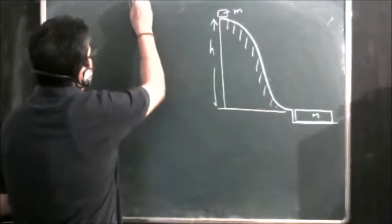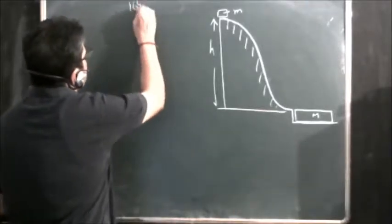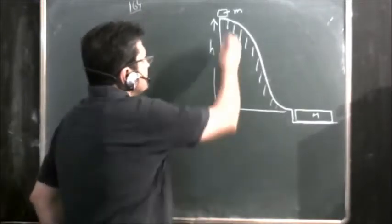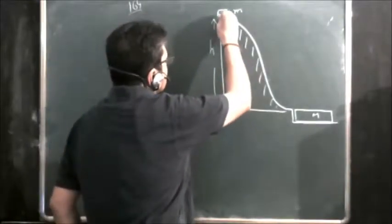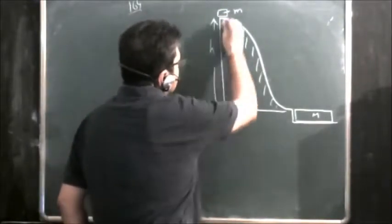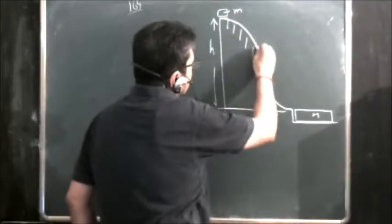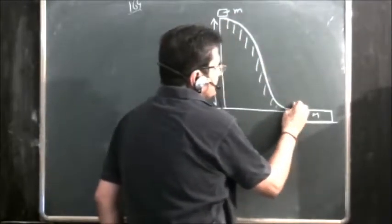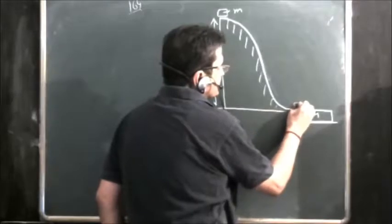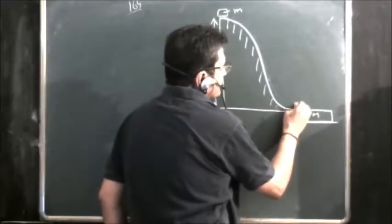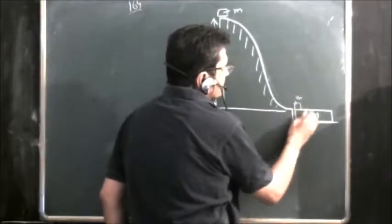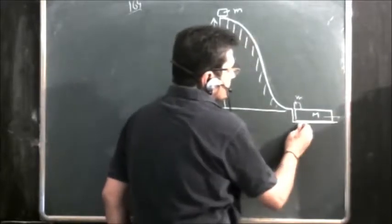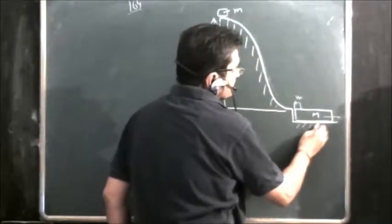We will solve an IIT JEE problem — Chapter 1, problem 164. In this problem, there is a disc of small mass m at a height h. It slides down on a smooth surface without friction and comes to a plank of mass capital M.